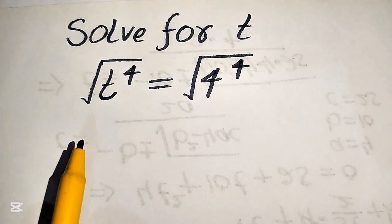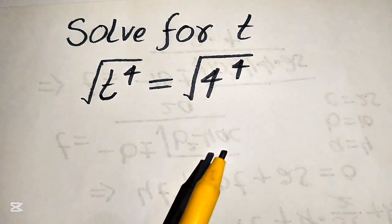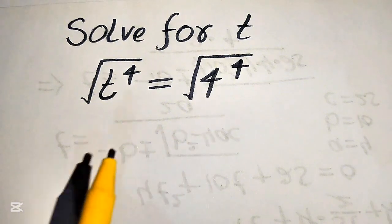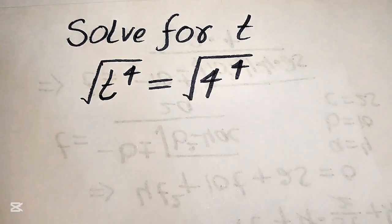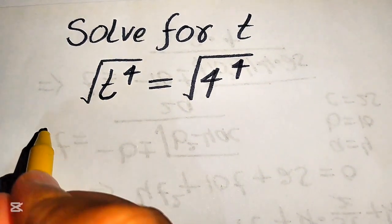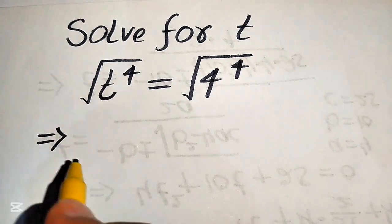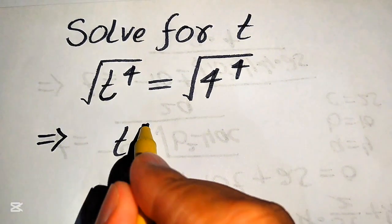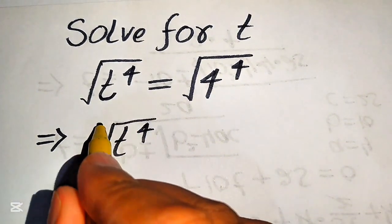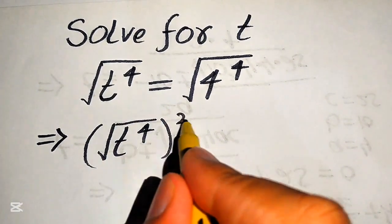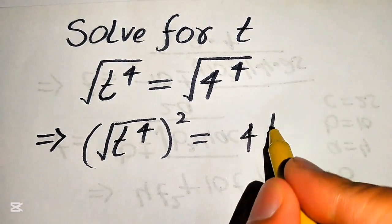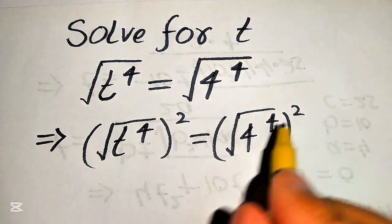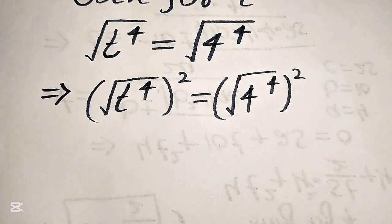We have a square root on both sides, so first we need to remove the square root sign. To eliminate it, we take the square on both sides. This gives us: the square root of t to the power of 4, squared, equals the square root of 4 to the power of 4, squared.